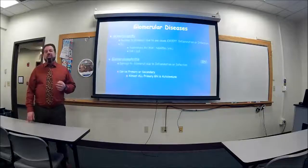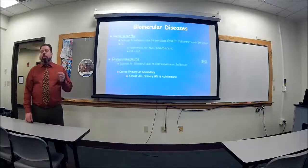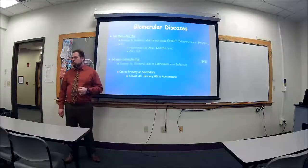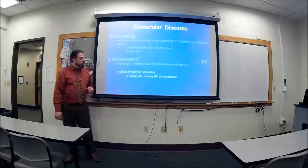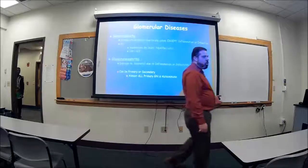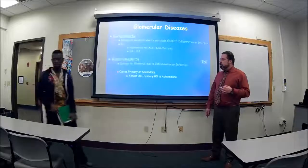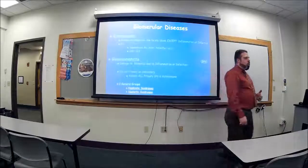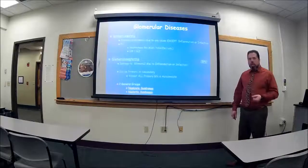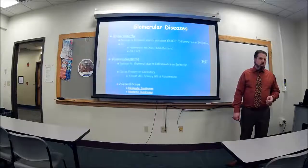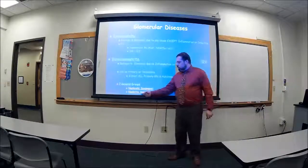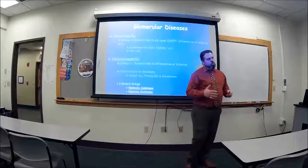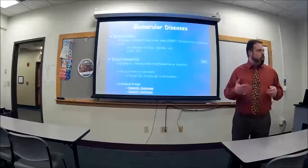Most of the primary sources are due to some kind of autoimmune disease. The secondary sources could be many different things. They can also be broken down into two different syndromes: either nephrotic syndrome or nephritic syndrome. This is what I want to spend most of the time talking about — the difference between nephrotic versus nephritic. But before we do that, we need to look at what the glomerulus is made up of.